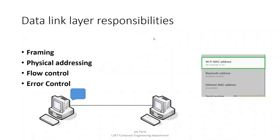Another responsibility of the data link layer is flow control and error control. Flow control addresses the situation where the sender is sending data at 5 bps but the wire can only transfer data at 1 bps, so even if the receiver is capable of receiving at 5 bps, it cannot due to the wire's limitation. To handle this, we follow certain protocols — this is known as flow control.